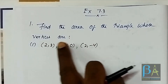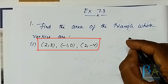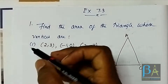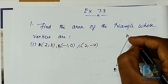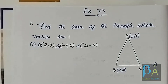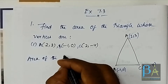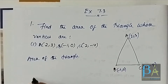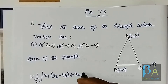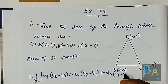The first question says: find the area of the triangle whose vertices are (2, 3), (-1, 0), and (2, -4). If you have the three vertices of a triangle given to you — let's say that's triangle A, B, C — when the three vertices of a triangle are given, we can find the area using the formula: half mod x1(y2 - y3) + x2(y3 - y1) + x3(y1 - y2).